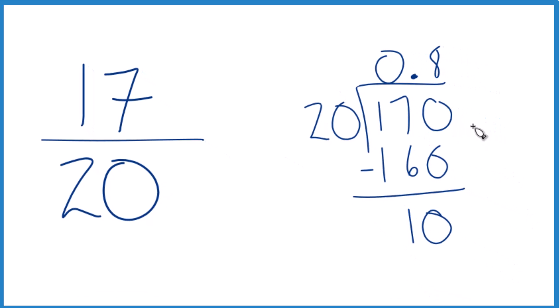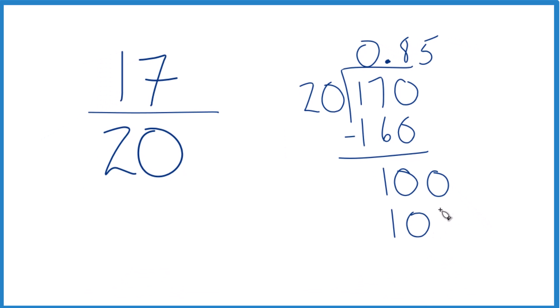20 won't go into 10, but let's make it 100 if we move over 1. 5 times 20, that is 100. Subtract, no remainder. So in answer to our question,